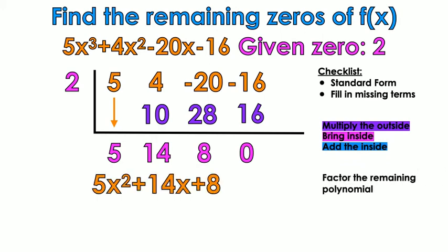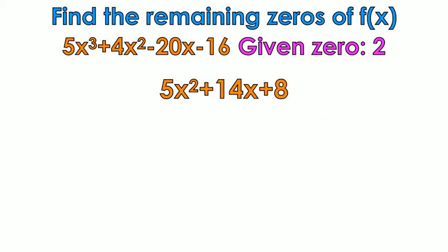Factor the remaining polynomial. So we started off with a degree 3. When you're doing synthetic division, your answer is always going to be 1 degree lower. So I started with a degree 3, so my answer is going to be a degree 2 or a quadratic. 5x squared plus 14x plus 8. This is a quadratic. I'm going to go ahead and factor the quadratic. I am not here to teach you how to factor, so this is the answer.